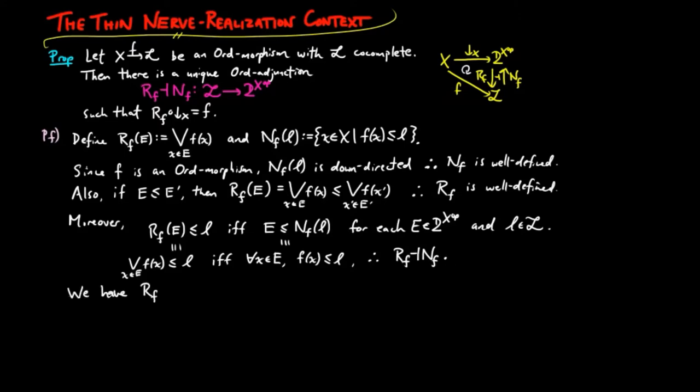We also have Rf lower segment on x is equal to f since the supremum of f(x') where x prime is less than or equal to x is equal to f(x) for each x in X. We have left to show uniqueness so if S is an order morphism from the down-directed sets on x to L or another such morphism,